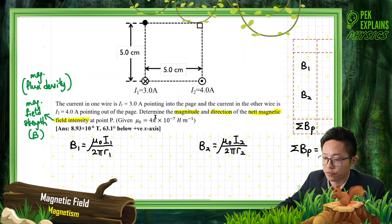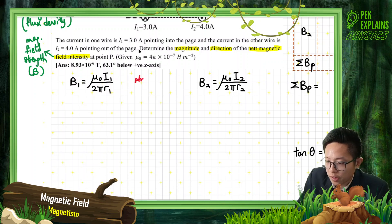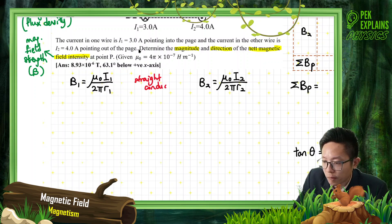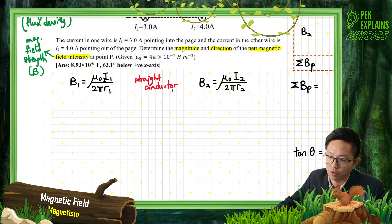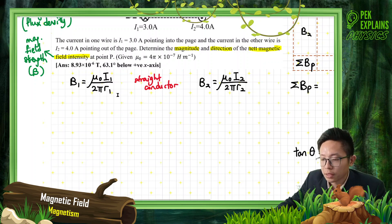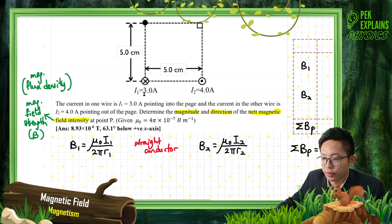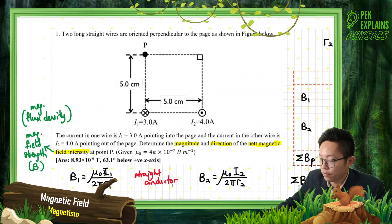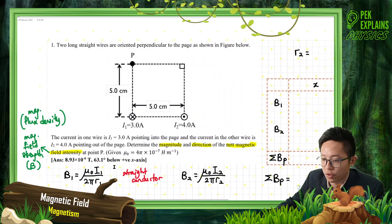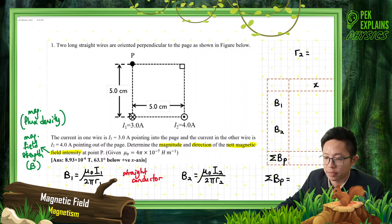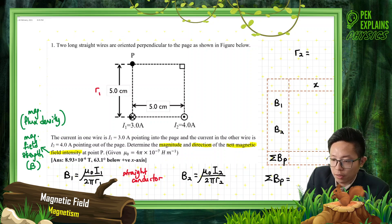For a straight conductor, the formula is B = μ₀I / 2πR, where R is the distance from the conductor. For current I1, it is 3 ampere, and the distance R1 is from conductor I1 to point P, which is 5 cm.